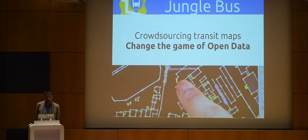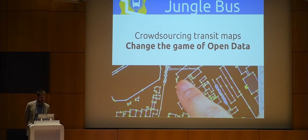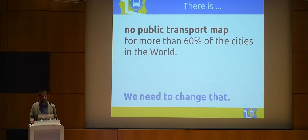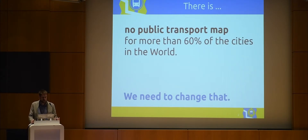Today I'm going to talk to you about how open data and crowdsourcing can help us to be more efficient to map transit. I'll start with a pretty impressive figure: there is no transport map for almost 60% of the cities in the world. When I talk to specialists and experts, they say it must be less than that. But if you go to some countries, there are no maps at all — it just doesn't exist.